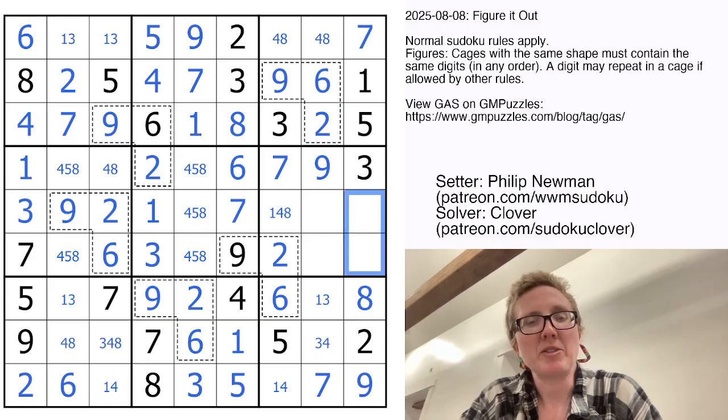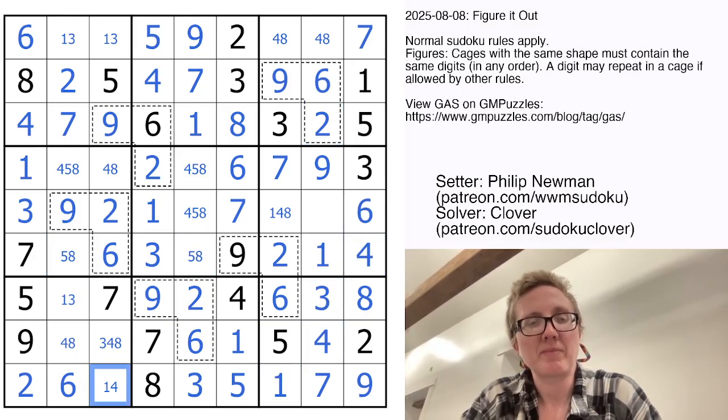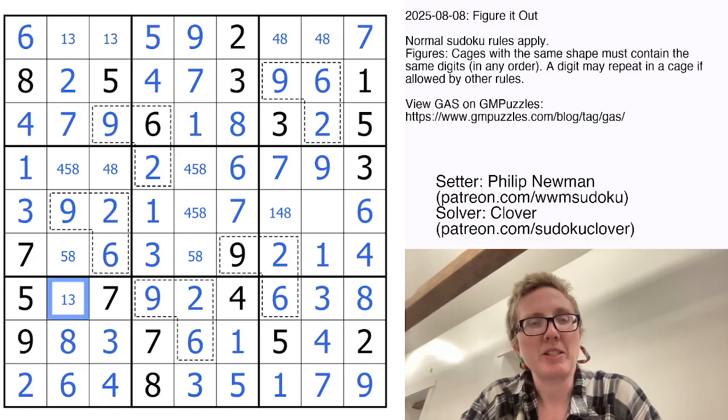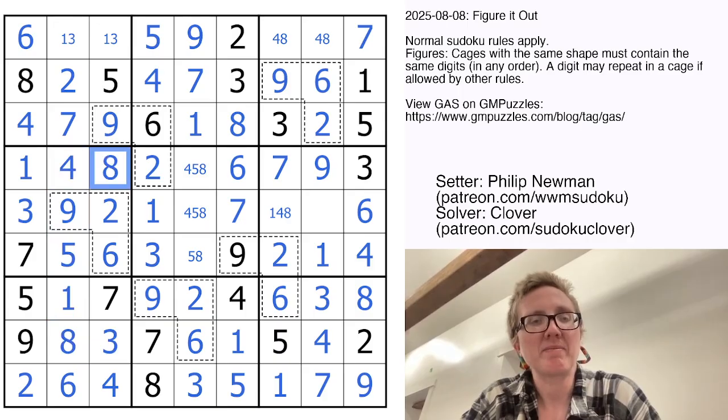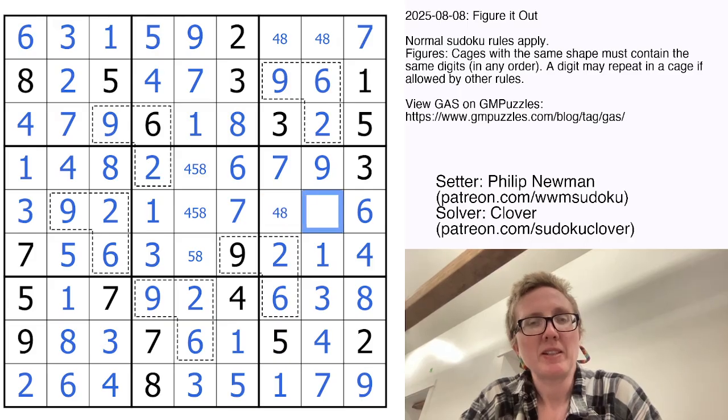So my last two digits there are going to be 4 and 6, so I can eliminate 4 from those cells. This is going to be a 1 to finish the row. And I'm getting some more digits just via Classic Sudoku. I can eliminate 8 there. That's not going to be a 1. I have a 4 in this column now.